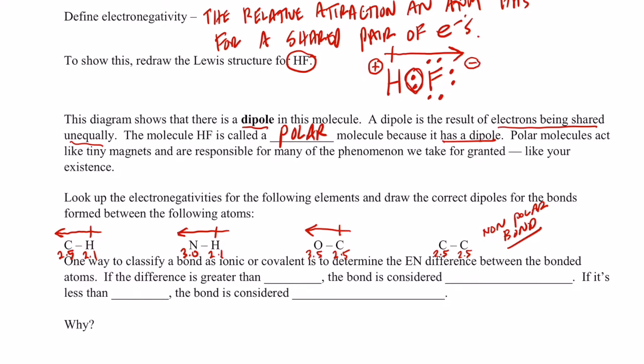Now, one way to classify a bond as ionic or covalent is to determine the electronegativity difference between the bonded atoms. If the difference is greater than 1.7, the bond is considered ionic. If it's less than 1.7, we consider the bond covalent. And the question is why?